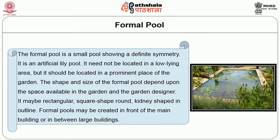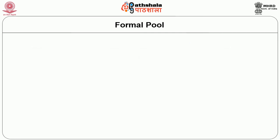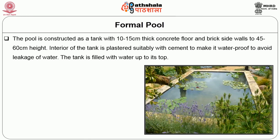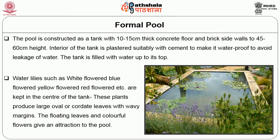A formal pool is a small pool showing definite symmetry — it is an artificial lily pool. It may not be in a low-lying area but should be located in a prominent place of the garden. The shape and size depend upon the space available and the garden design; it may be rectangular, square, round or kidney-shaped in outline. The pool is constructed as a tank with 10 to 15 cm thick concrete floor and brick side walls to 40 to 60 cm height. The interior is plastered with cement to make it waterproof. The tank is filled with water, and water lilies — white flowered, blue flowered, yellow flowered, red flowered — are kept in the centre. These plants produce large oval or cordate leaves with wavy margins, and their floating leaves and colourful flowers give attraction to the pool.